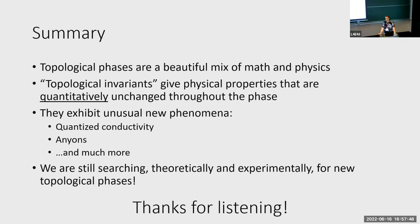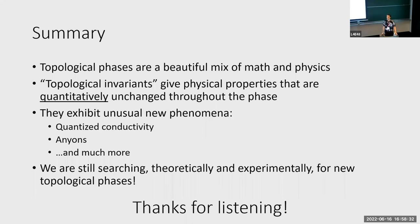That brings me to the end of my talk. To summarize, topological phases are a beautiful mix of mathematics and physics. Topological invariants give physical properties that are quantitatively unchanged throughout the phase of matter. By considering these topological invariants and topological phases, we get a lot of really unusual new physical phenomena, including quantized conductivity or resistance, and anyons, and much, much more. In the future, we're still searching — both theoretically and experimentally — for new topological phases and their realizations and signatures as well. Thank you very much for your attention, and I'm happy to answer more questions.